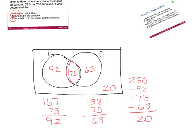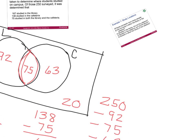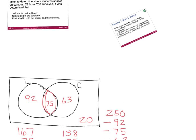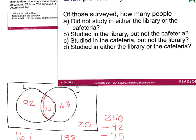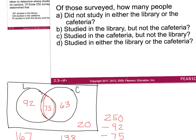Now that the Venn diagram is created, we can start answering questions. The first question: of those surveyed, how many people did not study in either the library or the cafeteria? The people who didn't use either location are those who landed in the rectangle but not in any circle. That is 20 people who studied in neither.